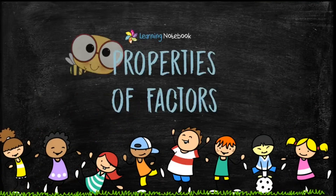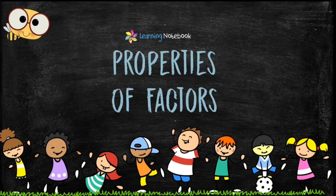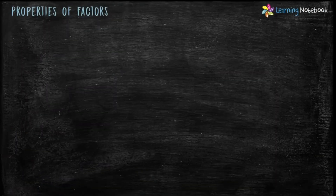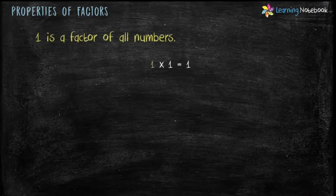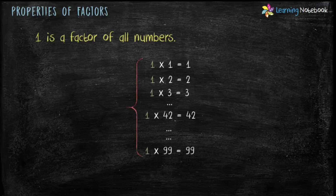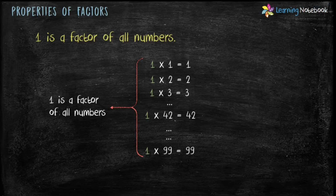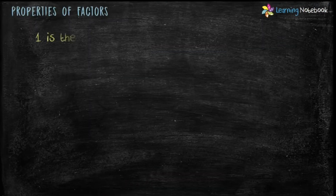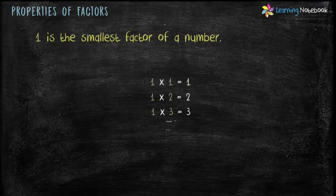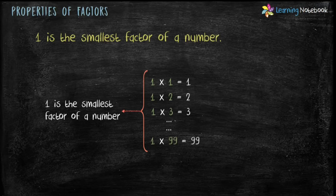Now let's understand the properties of factors. The 1st property is: 1 is a factor of all numbers, because 1 divides all numbers completely. The 2nd property is: 1 is the smallest factor of a number, because 1 divides all numbers completely and 1 is the smallest number.